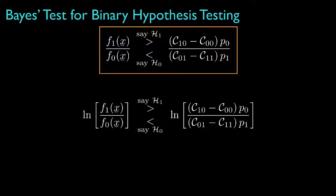Now for ease of implementing the decision algorithm and for subsequent analysis, we'll often want to simplify the form of the decision rule as much as possible. In many situations this will be easier if we apply the logarithm to both sides of the inequality.